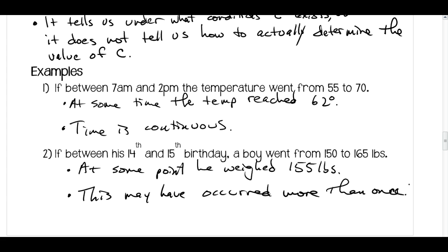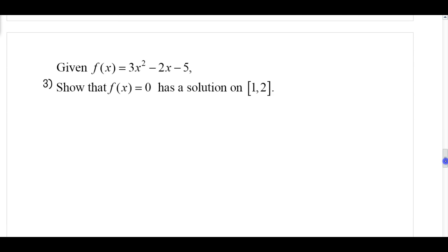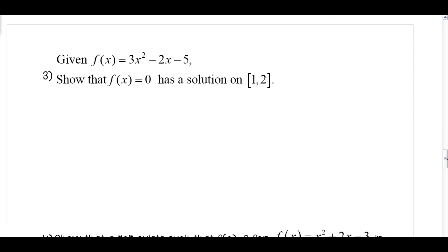Let's move on to another example. Given that f of x is equal to 3x squared minus 2x minus 5. Notice we have a polynomial, so it's going to be continuous everywhere. We want to show that f of x equals 0 has a solution on 1, 2. So basically, what we're looking at here is we're looking for a zero of the function. We want to show that somewhere between 1 and 2, there is a zero of the function. And remember, if we think about a zero graphically, this is a spot where it crosses the x-axis.